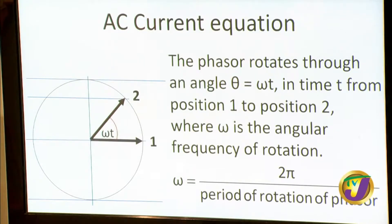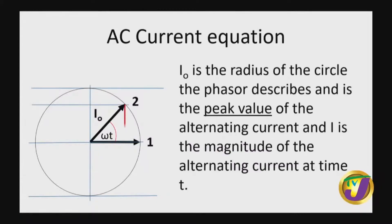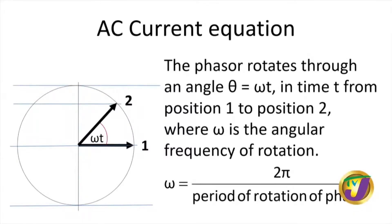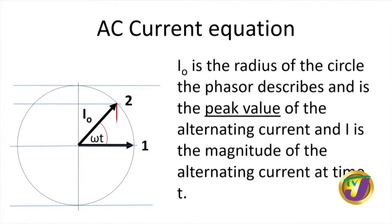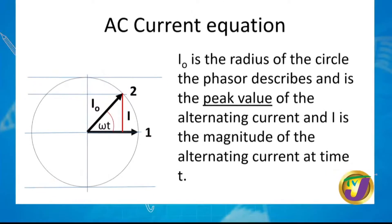Omega is equal to 2π divided by the period of rotation of the phasor. If an object is going around in a circular path, the period is T, and the angular velocity is 2π divided by T. Here, angular frequency ω equals 2π divided by the period. I₀ is the radius of the circle which the phasor describes, and it corresponds to the peak value of the current.